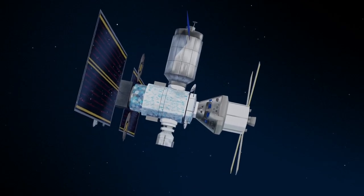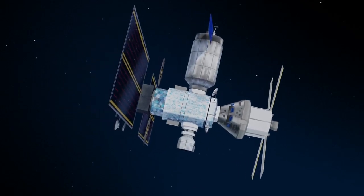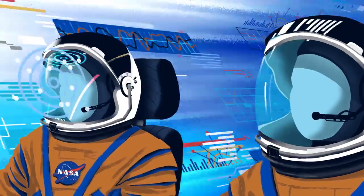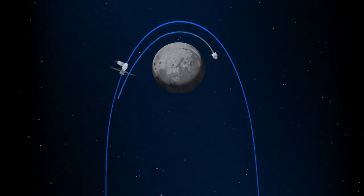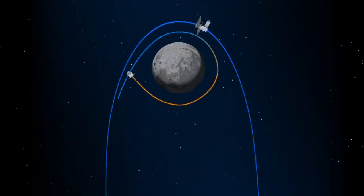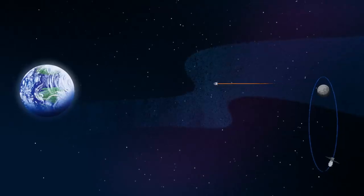Once back aboard the Orion spacecraft and undocked from Gateway, the crew fire their engine once to break out of the halo orbit, and once again to sling the spacecraft around the Moon, placing it on a multi-day trajectory back towards Earth.